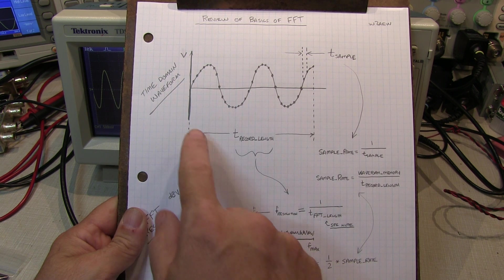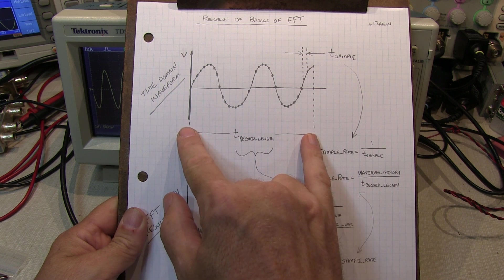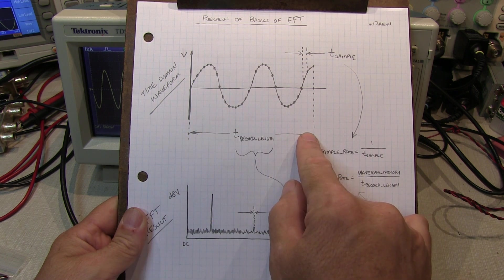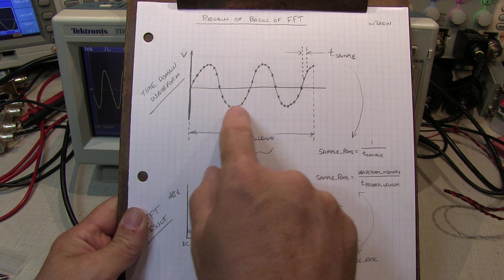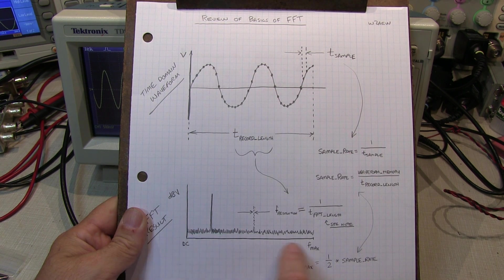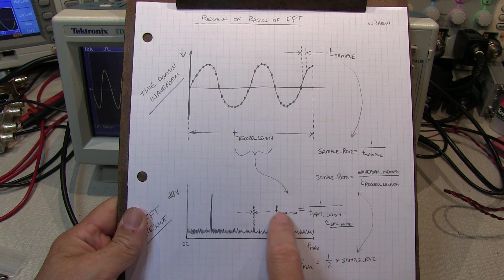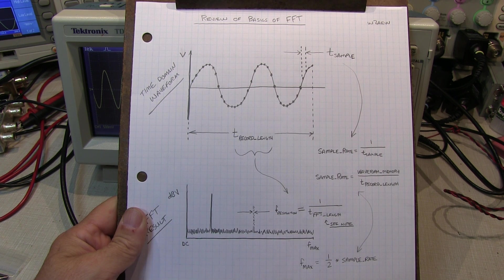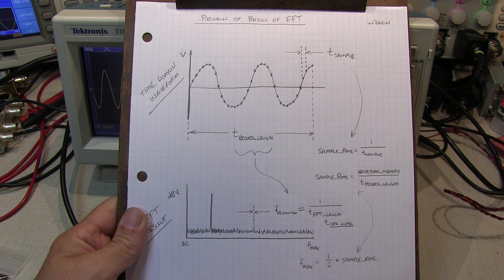The record length that you capture in the scope — the duration of that in time — and the sample rate used to capture the waveform will affect the parameters of the FFT result in terms of frequency resolution and frequency range. Those details are summarized here, and again there's more detail in video number 65, which I'll link down in the description below.